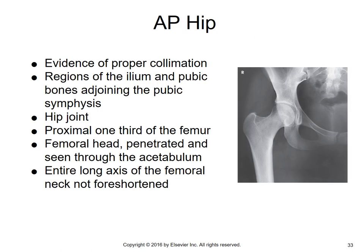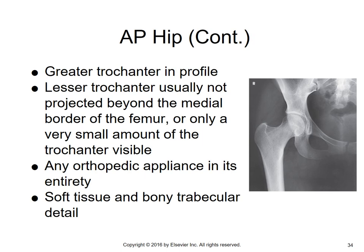For the AP hip: good collimation is needed, with the regions of the ilium and pubic bones adjoining the pubic symphysis visible, from the pubic symphysis out to the trochanter area. The hip joint should be in the center of the image, and the proximal one-third of the femur should be seen. The femoral head is penetrated and visible through the acetabulum. The entire long axis of the femoral neck should not be foreshortened because you inverted the foot. The greater trochanter should be in profile; the lesser trochanter should not be projected beyond the medial border of the femur. Any pin or orthopedic appliance must be seen in its entirety.